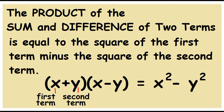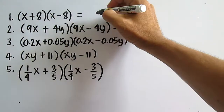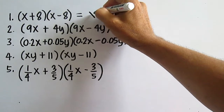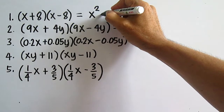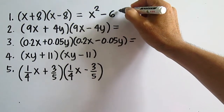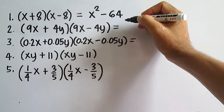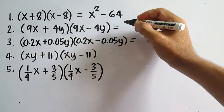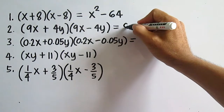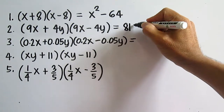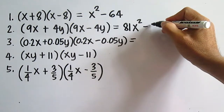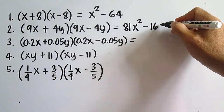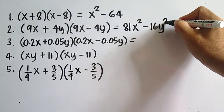Find the product. x plus 8 times x minus 8 is equal to x squared minus 64, since 8 times 8 is 64. Number two: 9x times 9x is 81x squared, and 4y times 4y is 16y squared, giving 81x squared minus 16y squared.